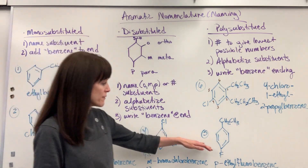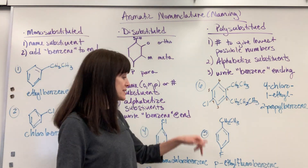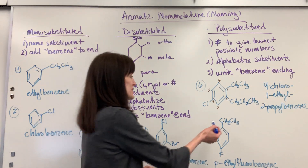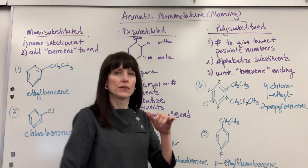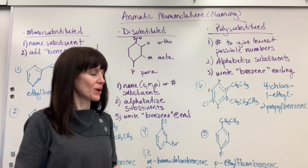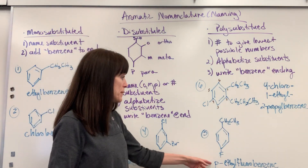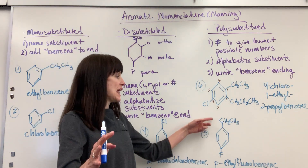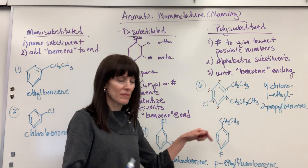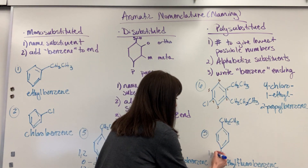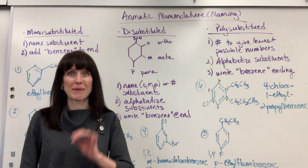And then my next example here, I have an ethyl group and a fluorine. Notice they're between the one, two, three, four — the one and the four carbons. So this would be para, and then name it alphabetically: ethylfluorobenzene. And again, that could also be written as 1,4-ethylfluorobenzene.